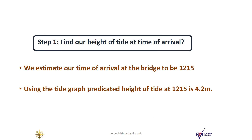Step one: we find our height of tide at the time of arrival. In this example, we estimate our time of arrival at the bridge to be 1215. Using the tide graph, we found the predicted height of tide at 1215 is 4.2 meters.